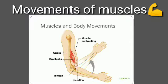Movements of muscles. Muscles are firmly attached to bones by means of tendons. Due to contraction of muscles, there is movement at the joint. This induces movement in the bones. They move either nearer to or away from each other. All kinds of movements are because of the action of muscles.